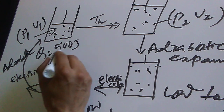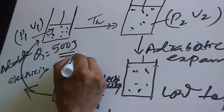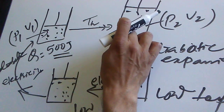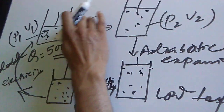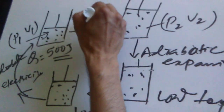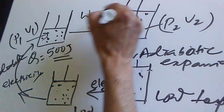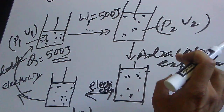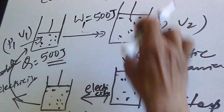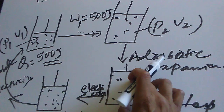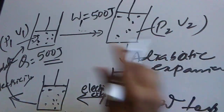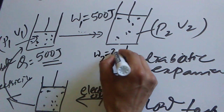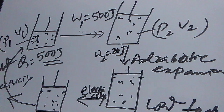So how much heat energy did we absorb? 500 joules of heat energy. The work from the isothermal expansion — going from state 1 to state 2 — is W1 equals 500 joules. The work from the adiabatic expansion is W2, and let's say that is 20 joules.